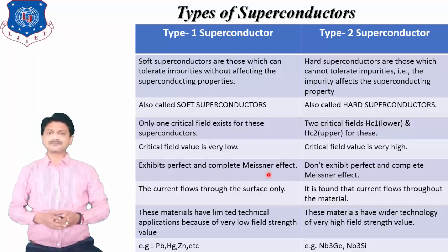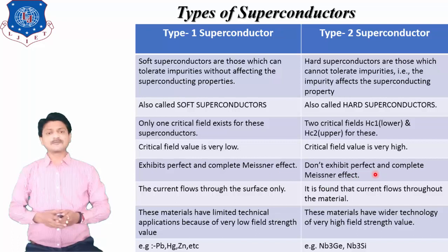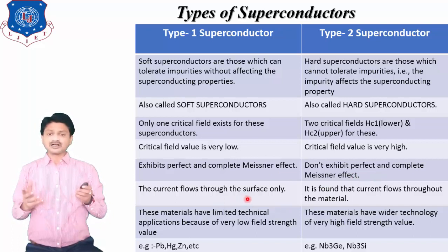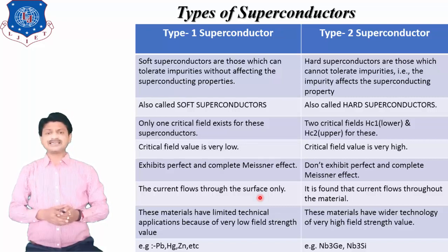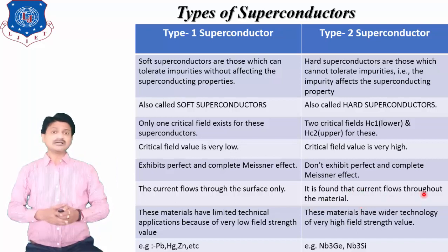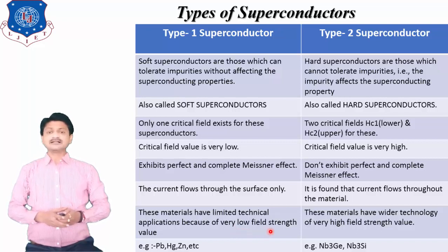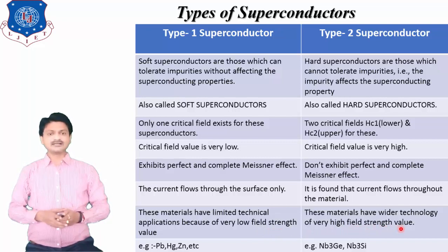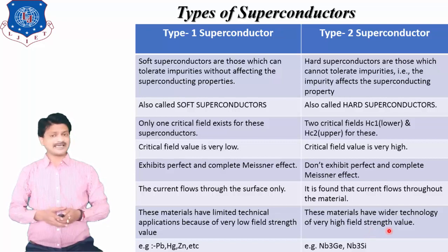Type 1 superconductors exhibit a perfect Meissner effect, whereas Type 2 superconductors do not exhibit a perfect Meissner effect. In Type 1, current flows through the surface of the material, while in Type 2, current flows throughout the entire particle. The critical magnetic field value is low in Type 1 and high in Type 2. As a result, Type 1 superconductors have limited technical applications due to their very low critical field value.